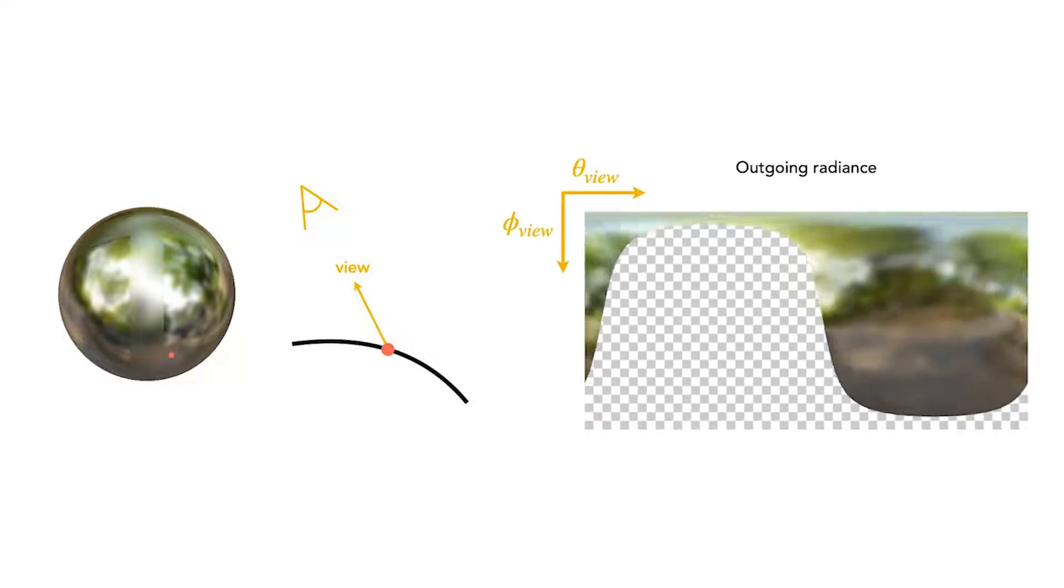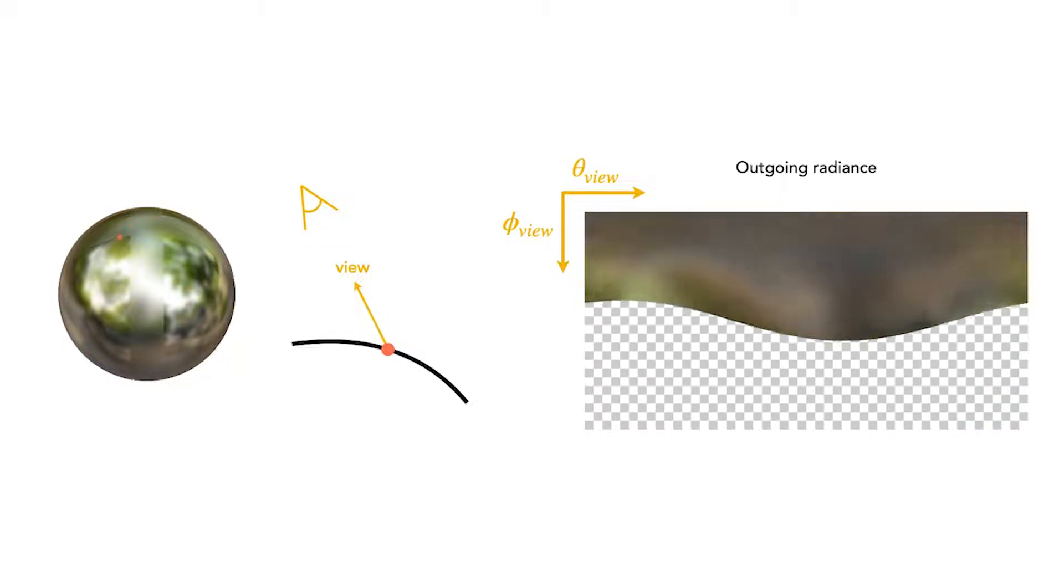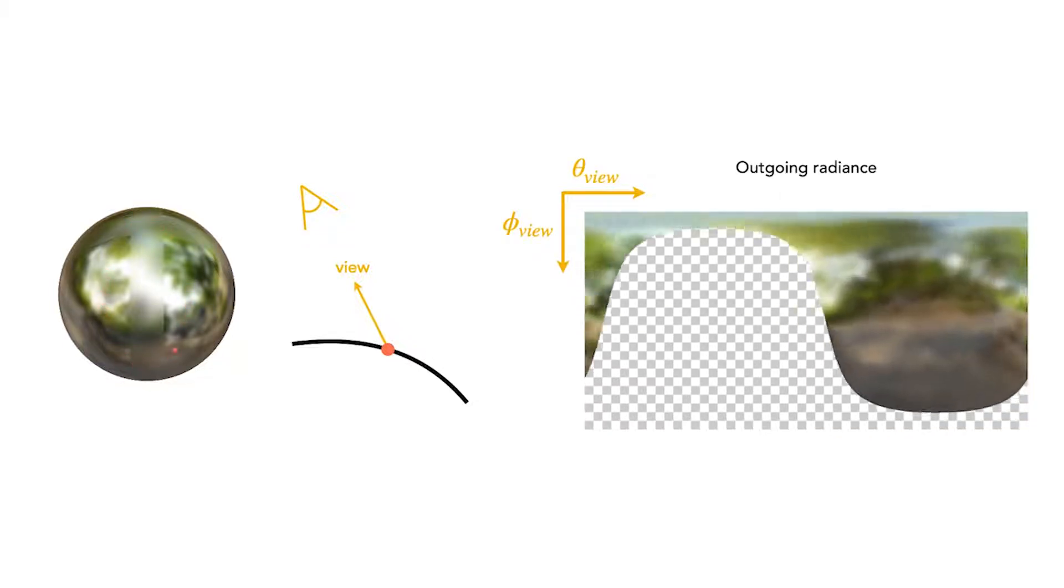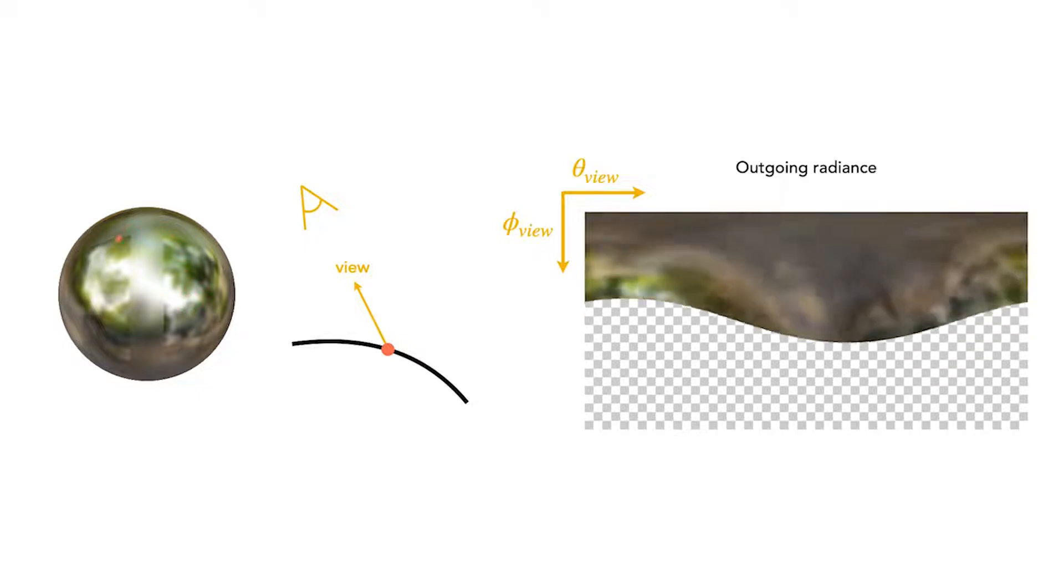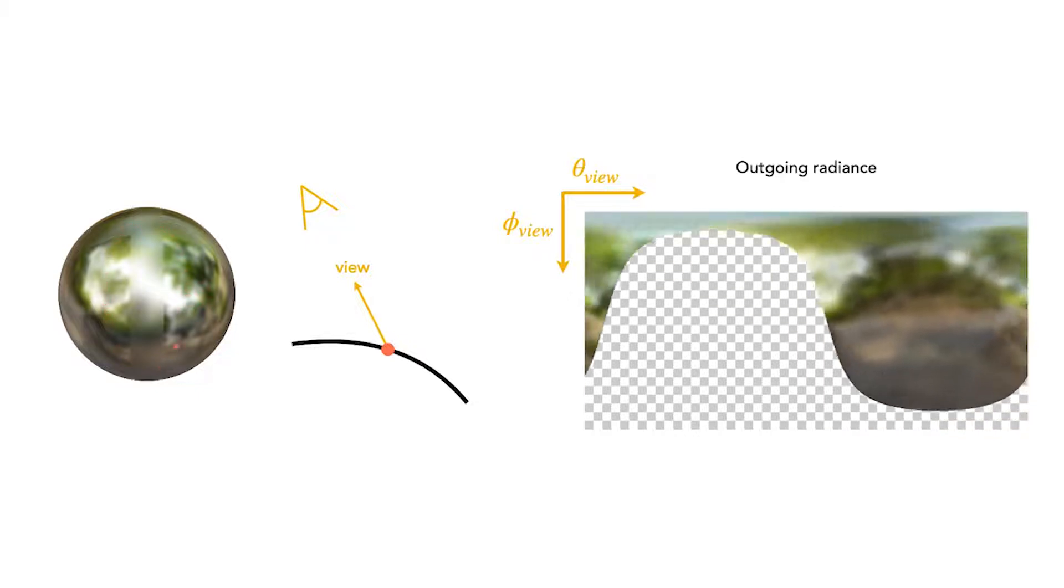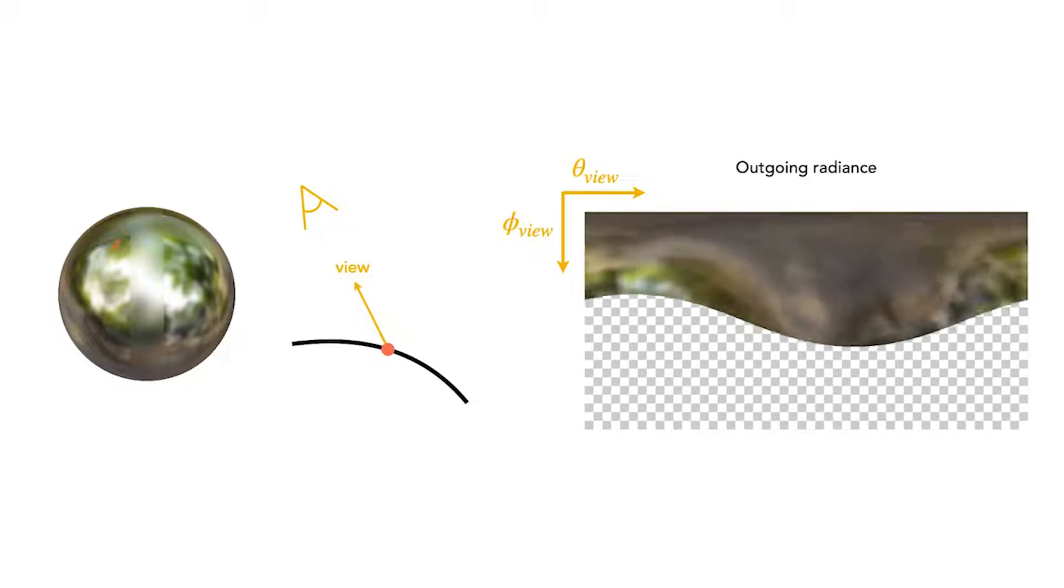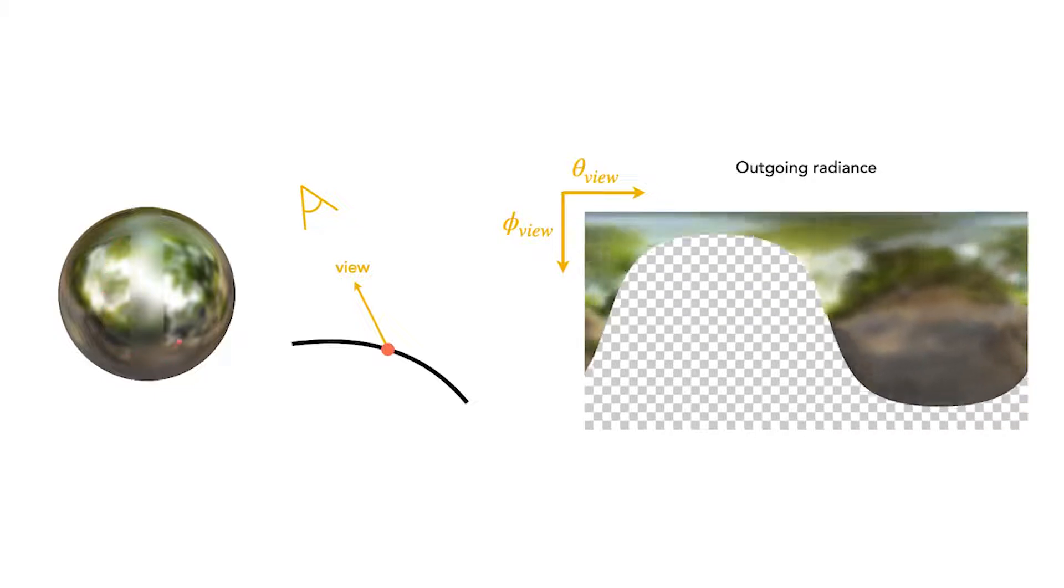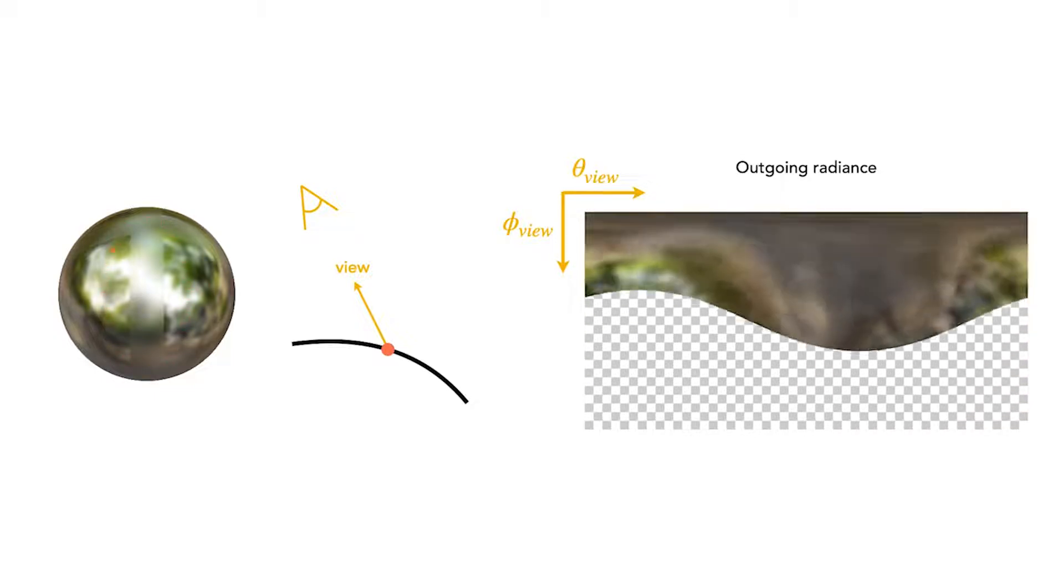One of the reasons NeRF does this is because it represents outgoing radiance as a function of view direction. Let's look at the true outgoing radiance for a moving point on the ball marked in orange for every viewing direction. This is the spatially varying outgoing color as a function of view direction that NeRF needs to learn, with a checkerboard pattern signifying invisible directions that go into the surface. Even for this simple shape, this function changes rapidly and is difficult for a network to approximate and interpolate.